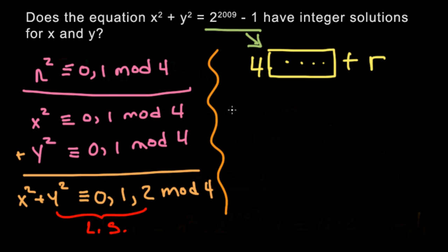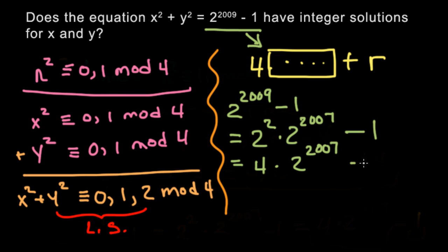So when we rewrite 2^2009 - 1, since we're dividing this by 4, we need a 4 somehow. And we're going to get that 4 from 2 to the power of 2009. So we can rewrite this as 2² times 2^2007, because you're taking 2 out, minus 1. And that's just 4 times 2^2007 minus 1.